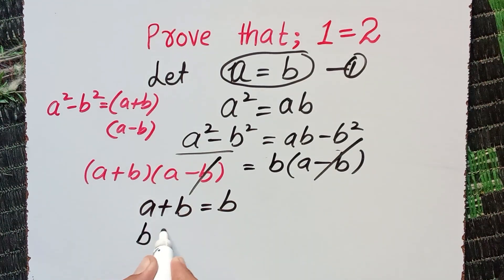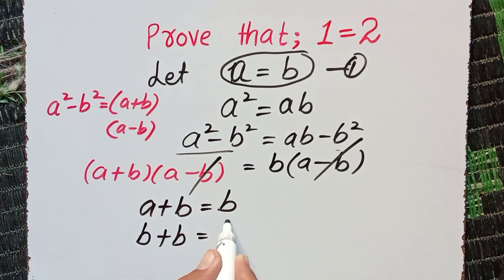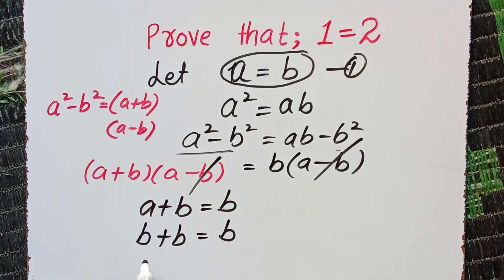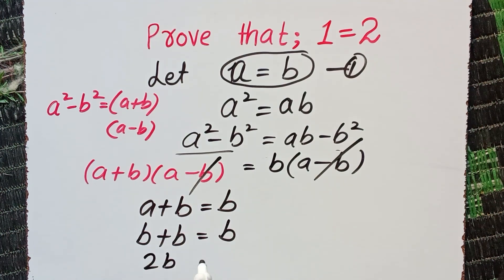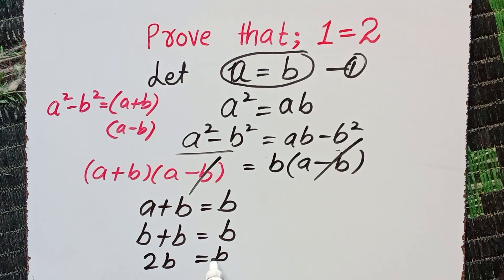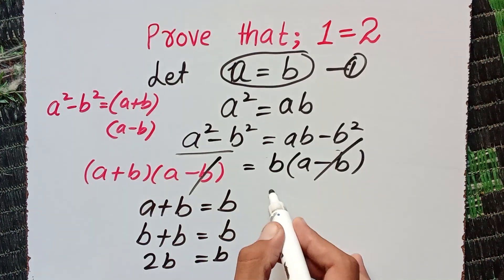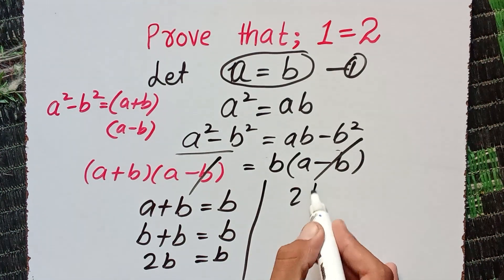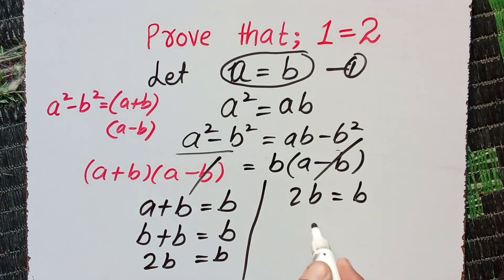So b plus b equals b, and b plus b equals 2b, which equals b. Now from here I can solve: 2b equals b. Divide both sides by b, so b cancels and 2 equals 1.